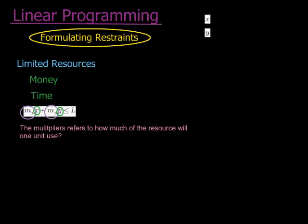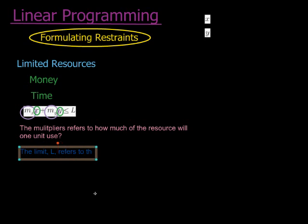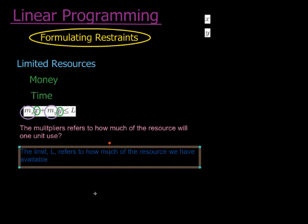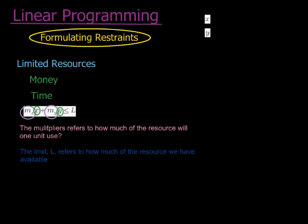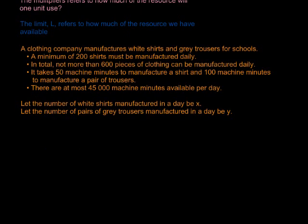The next part of the inequality is our limit — that's the L. The limit refers to how much of the resource we have available. We don't have an infinite amount of money. There are also other restraints in this example — not all of them are resource restraints — but we're going to find the resource one just now.